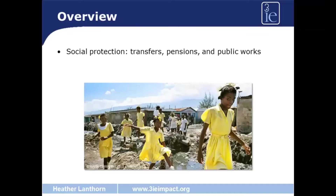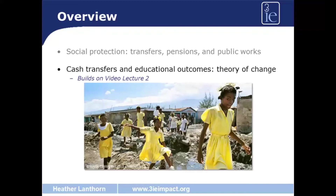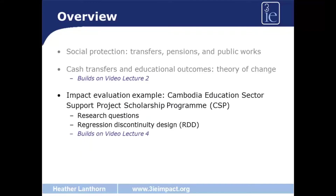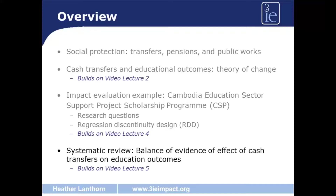The social protection sector includes several interventions that can help households facing financial hardship, such as the transfers of in-kind materials or cash, pension programs, and public works programs. In this lecture, we'll first look at the theory of change that suggests why cash transfers may be able to affect education outcomes, then look at a specific example from Cambodia where researchers use a regression discontinuity design to estimate the causal impact of a conditional cash transfer on educational outcomes. Finally, we'll look at the balance of evidence from a systematic review about how cash transfers may impact on educational outcomes.